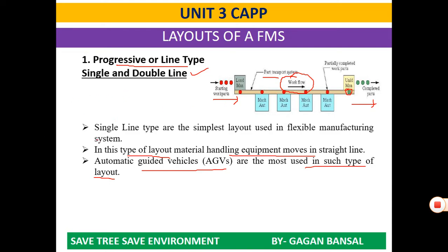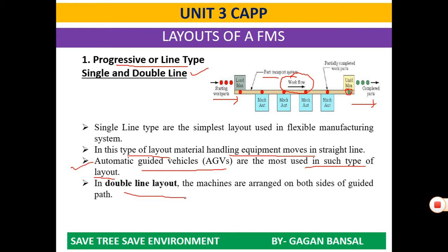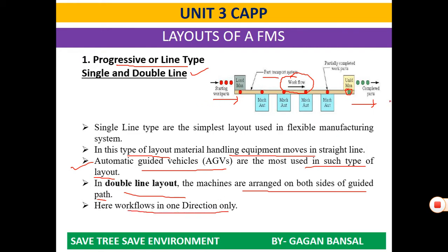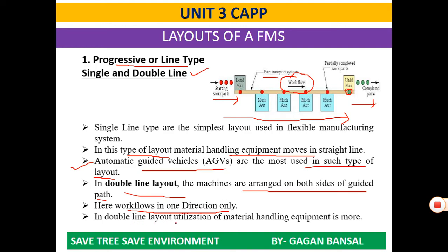In single line layout it can be highly automated. In double line layout the machines are arranged on both sides of the guide paths, and the outflow is in one direction only — unidirectional, say from left to right. The key difference is that in double line layout the utilization of material handling equipment is greater than in single line layout.